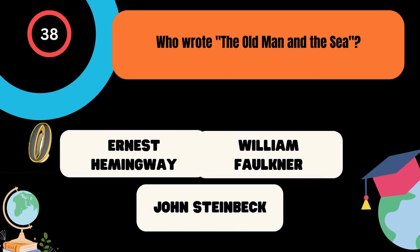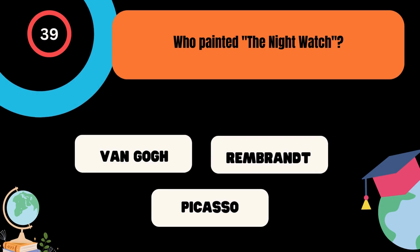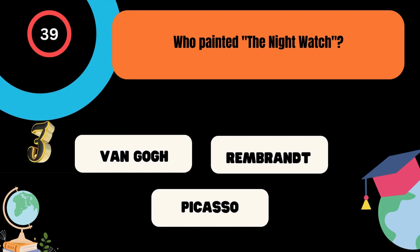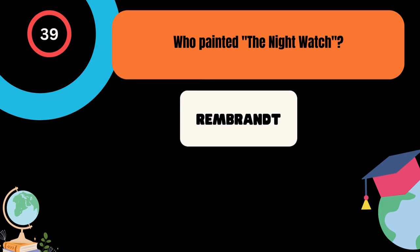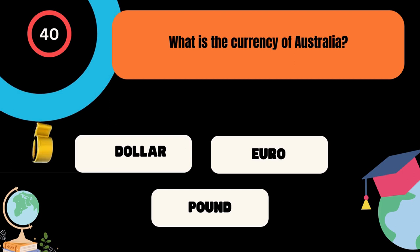Who painted The Night Watch? A. Van Gogh, B. Rembrandt, C. Picasso. And the correct answer is Rembrandt. What is the currency of Australia? A. Dollar, B. Euro, C. Pound. And the correct answer is Dollar.